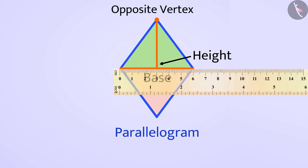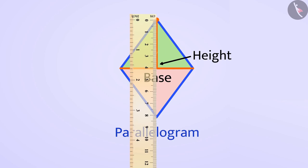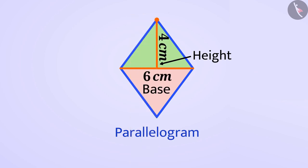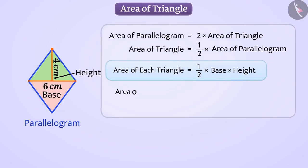On measuring, you will find that this height is 4 cm. Since the base is 6 cm and the height is 4 cm, the area of each triangle is equal to half multiplied by 6 cm multiplied by 4 cm, which equals...